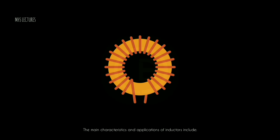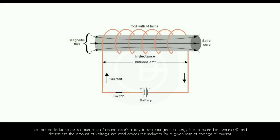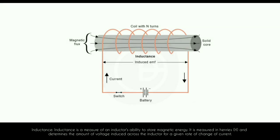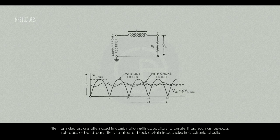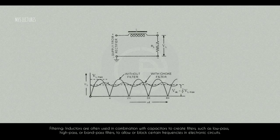The main characteristics and applications of inductors include: 1. Inductance — measured in henrys (H), it determines the amount of voltage induced across the inductor for a given rate of change of current. 2. Filtering — inductors are often used in combination with capacitors to create filters, such as low-pass, high-pass, or band-pass filters, to allow or block certain frequencies in electronic circuits.